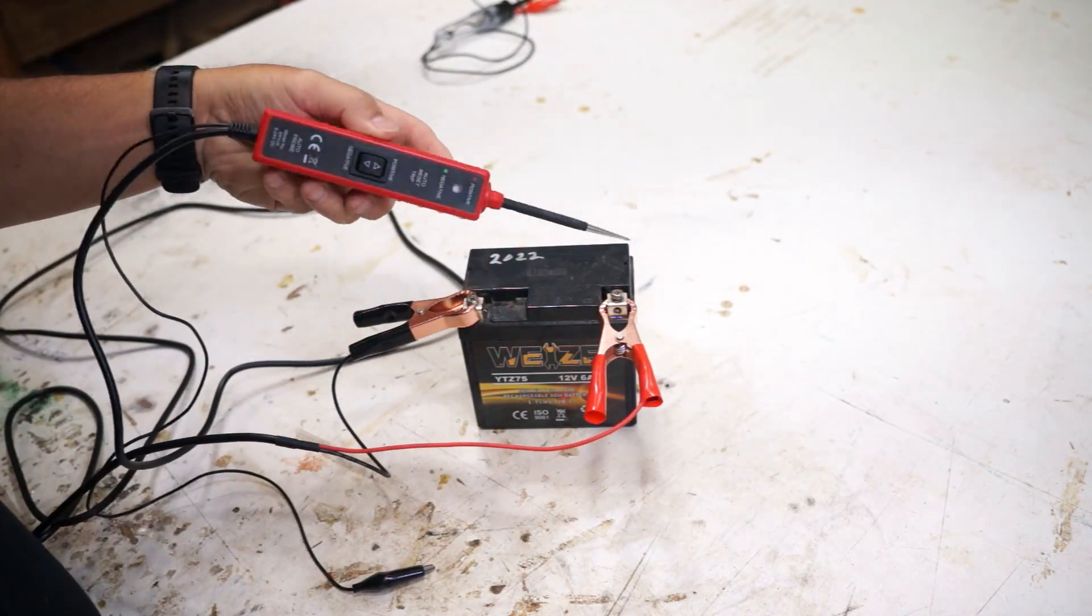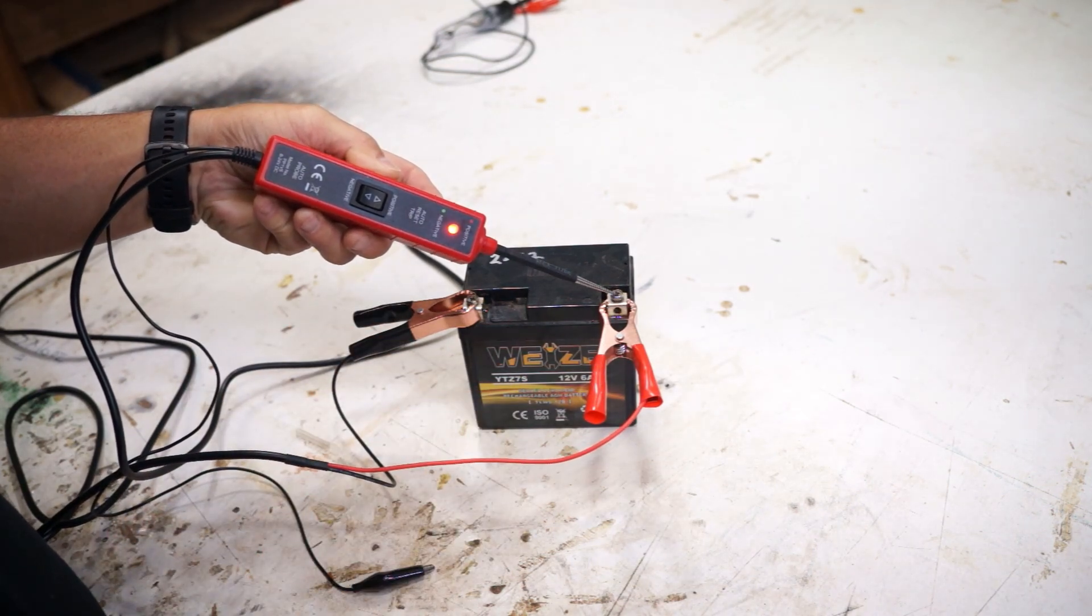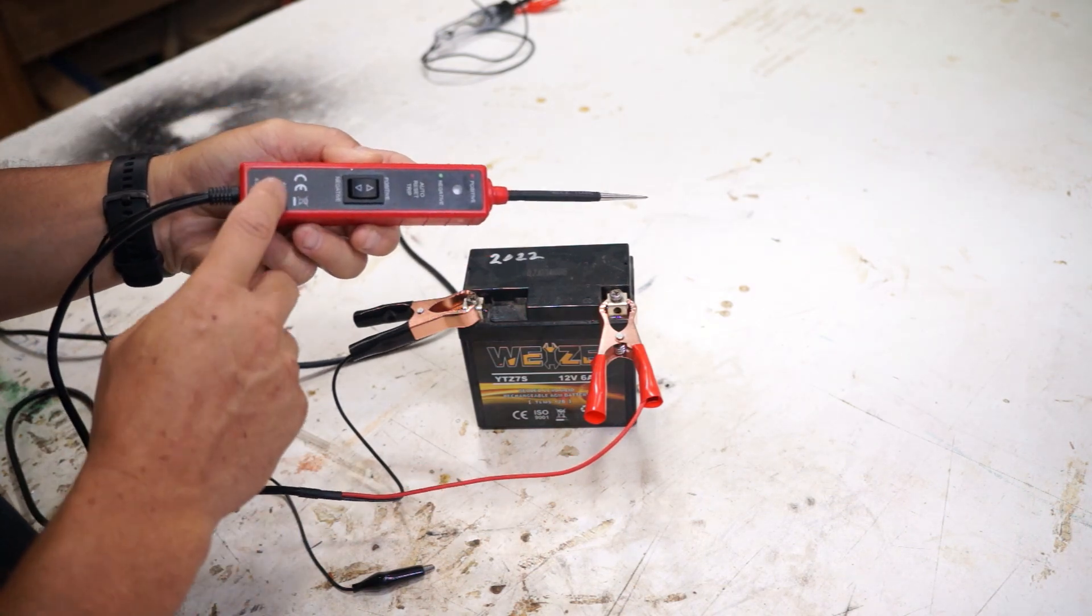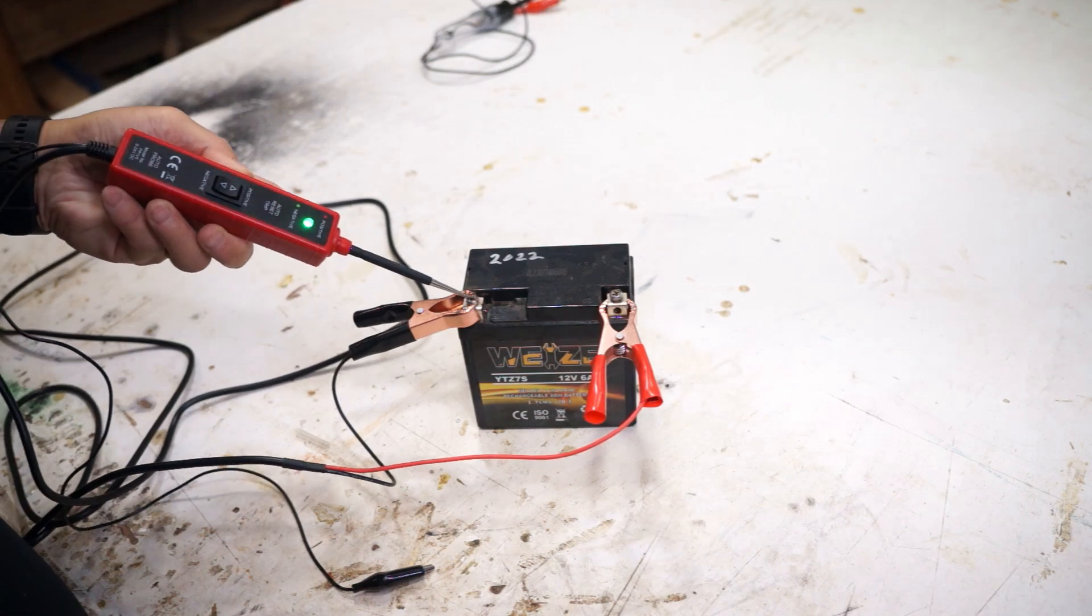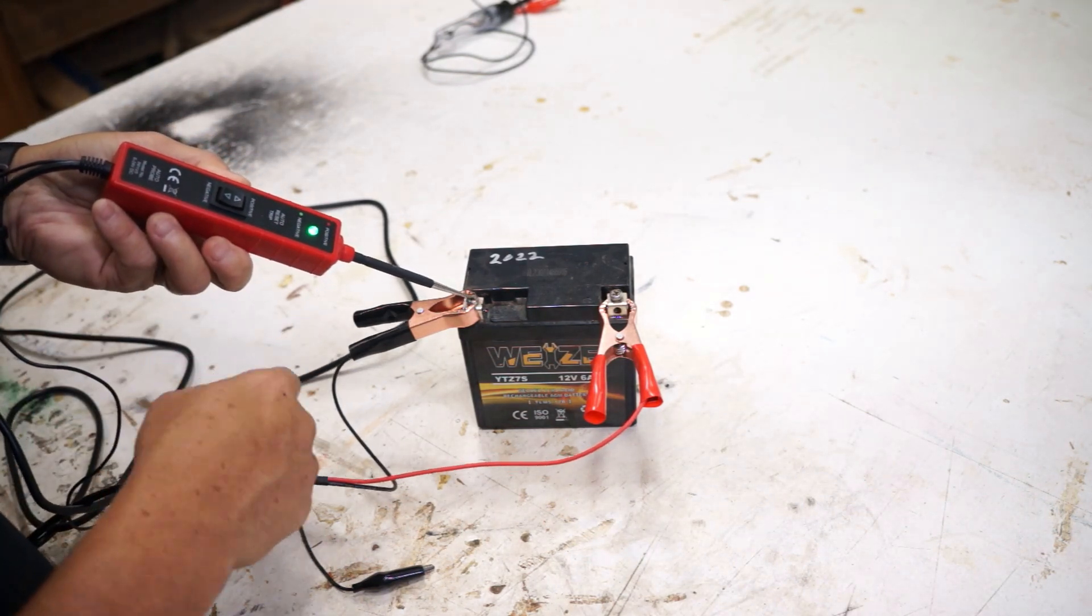So I'm just going to touch it and you see how it's turned red because I'm touching the positive side of the battery or the circuit. There's circuitry inside here that knows the direction. Touch the negative and it turns green so that's telling me this is the ground side of the circuit.